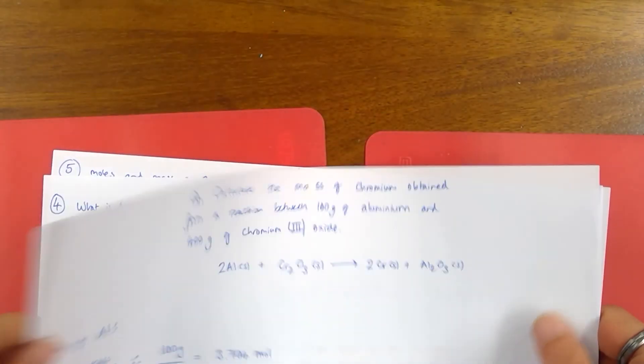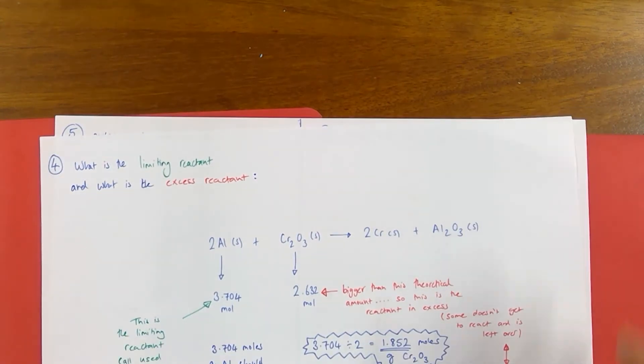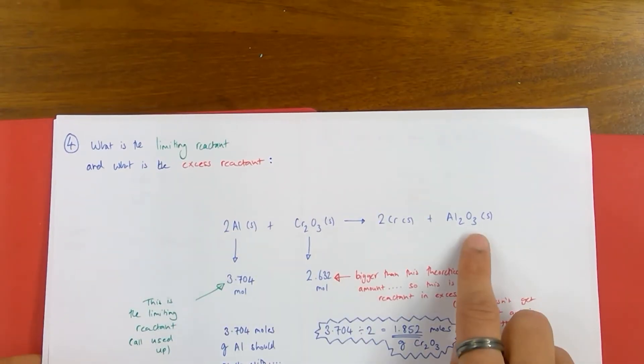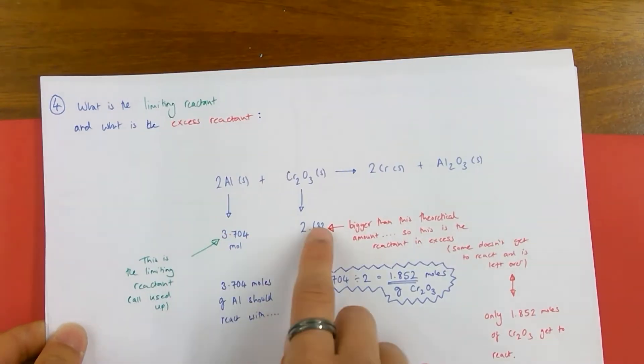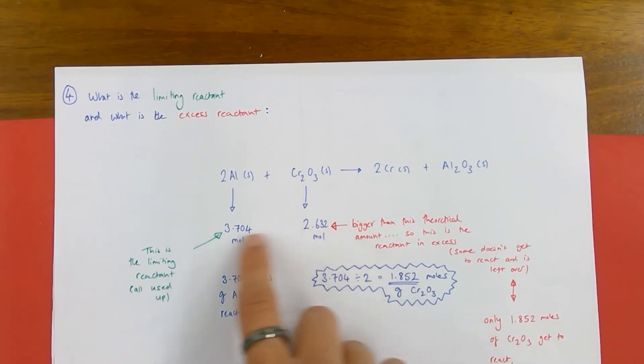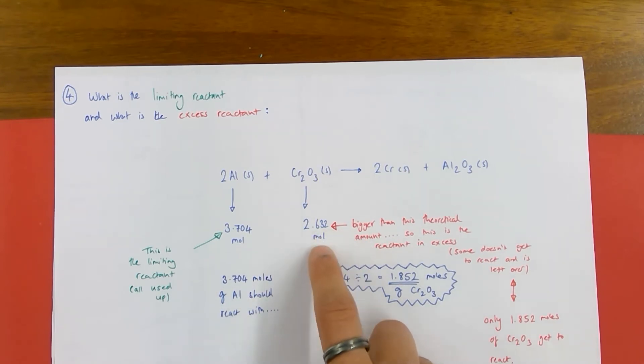We're going to consider what is the limiting reactant and which of the reactants is therefore in excess, more than enough. Here's the equation again and I've actually listed down here the two amounts of moles I had from the previous calculation. So 3.704 for the aluminium and 2.632 for the chromium.